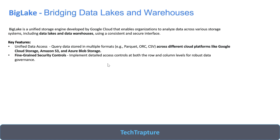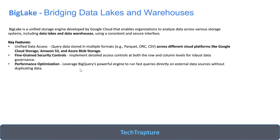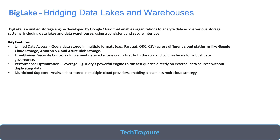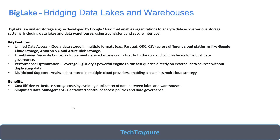You can also use fine-grained security controls — row-level and column-level access security. There is also performance optimization using BigQuery features, multi-cloud support to query data from AWS and Azure, and cost efficiency — you don't need to move data from AWS to BigQuery or load unnecessary data from Cloud Storage. It simplifies data management and enhances flexibility for analyzing diverse data types across multiple clouds.